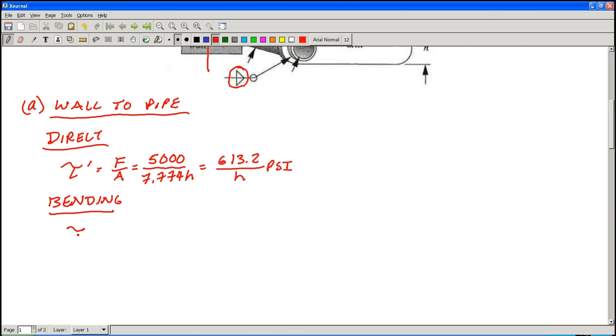I'll call this one tau double prime. The moment's going to be the 5,000 pound load times distance L, which is 12 inches. C is the outer diameter of the pipe divided by 2. Remember, the weld is located at the outer diameter, so that's where the calculation is going to take place. So out of that, we get 88.24 divided by H.